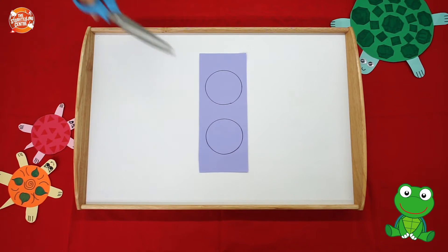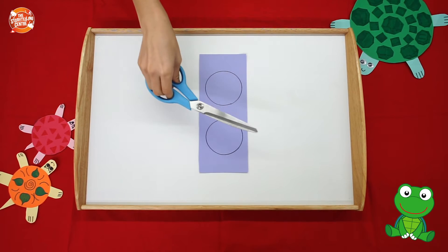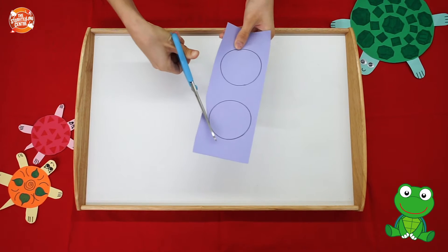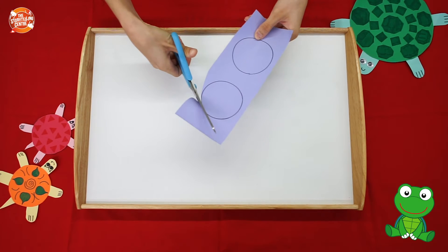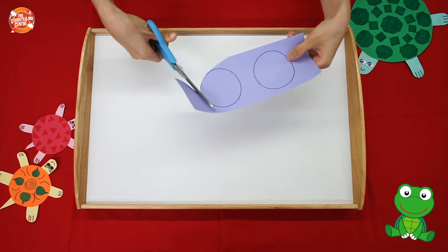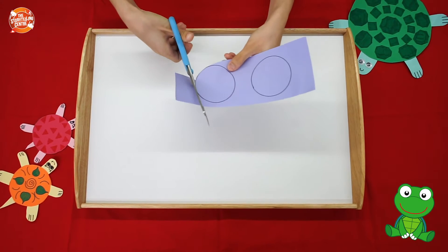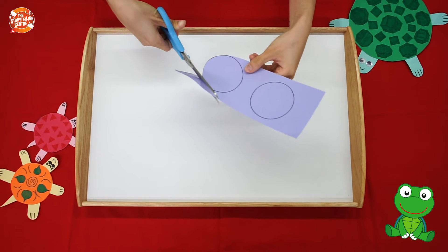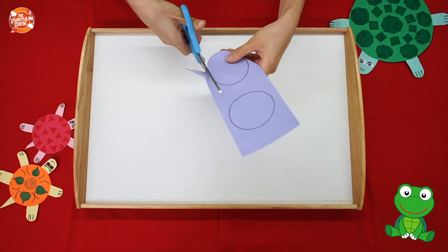Now we are going to use our scissors and cut along the lines. Now remember boys and girls, scissors are really sharp, so if you need any help, you can always ask mommy or daddy or even a grown-up.